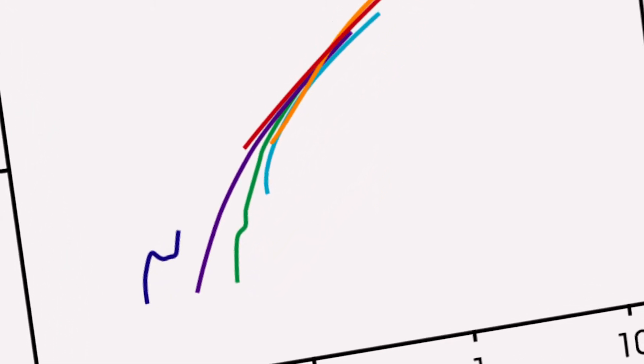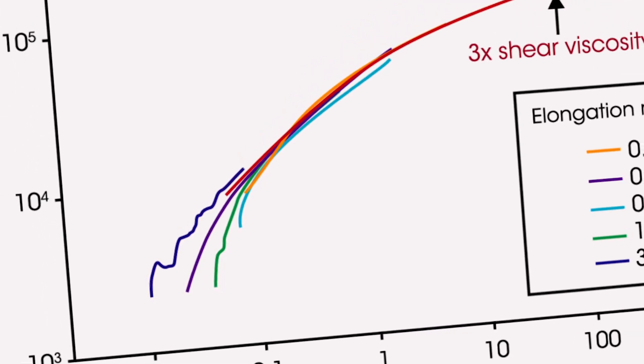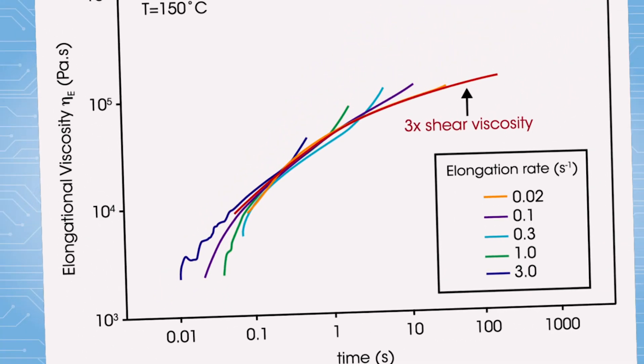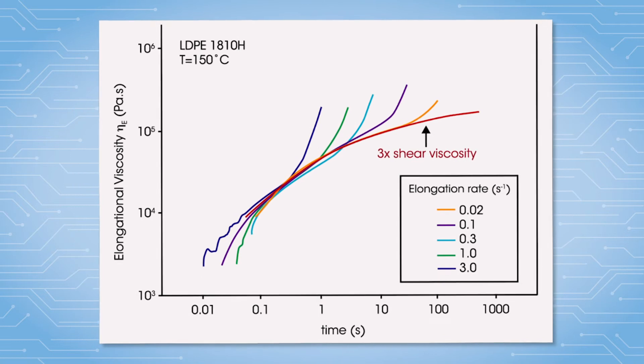The elongational viscosity can be used to interrogate the molecular structure of polymers. Strain hardening correlates branching in the polymer. This hardening is typically not easily observed in shear and capillary rheometry.